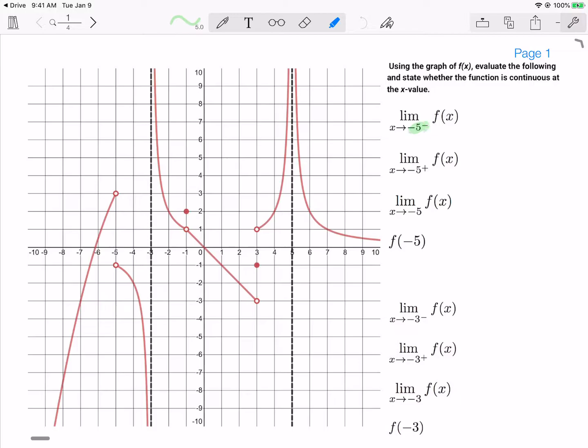First, as we approach negative 5 from the left, as I come along this function, it appears I'm approaching a y value of 3. And as I come from the right, I'm approaching a y value of negative 1.